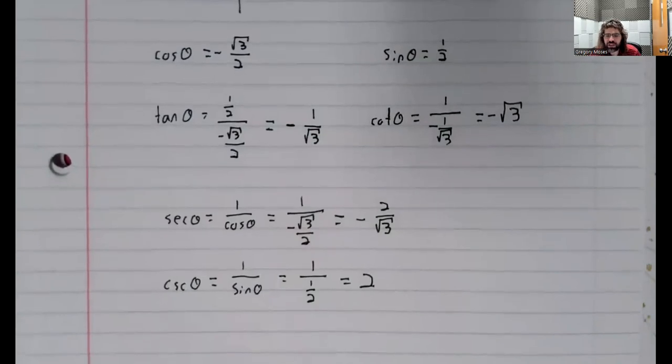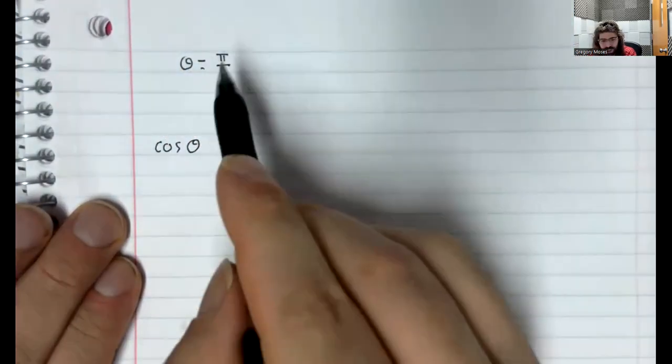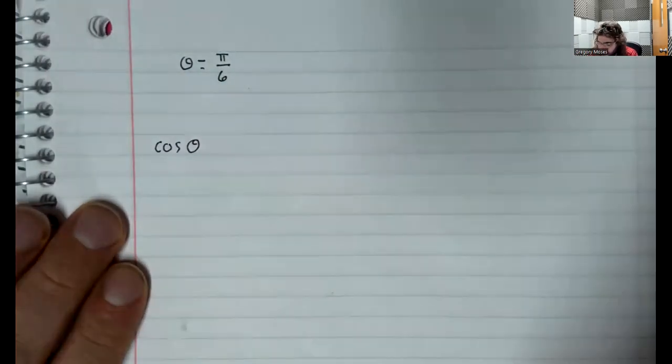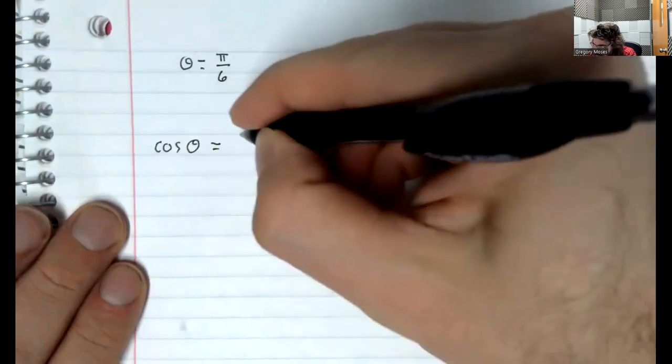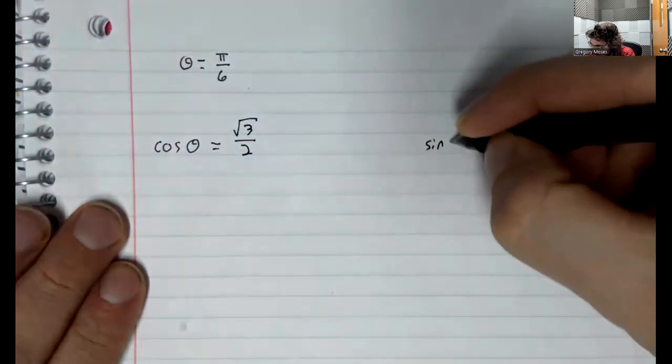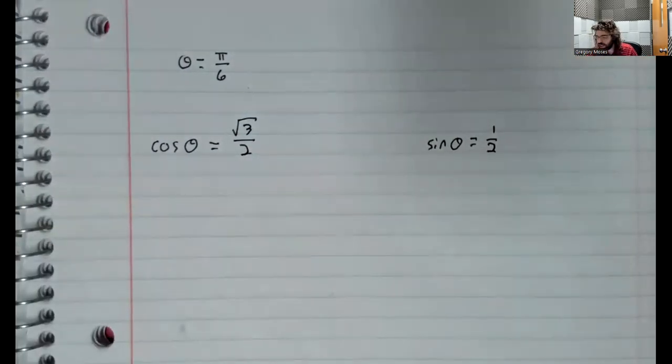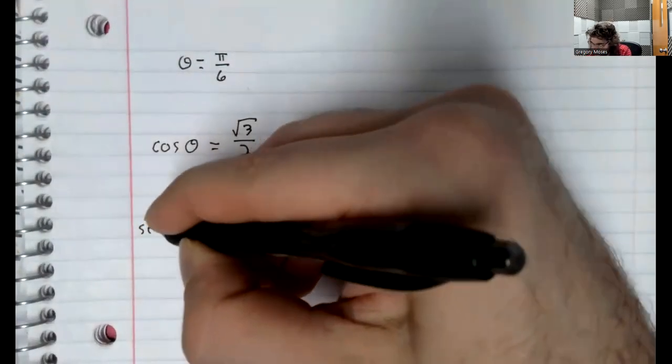Example 2 is getting at the same ideas, the same concepts. In example 2, you're given the angle, and you're asked to find the trig functions of the angle. And example 2 is based on the assumption that you have memorized the sine and the cosine of pi over 6, which you were asked to do. And once you know the cosine and the sine, the secant...